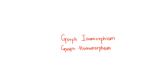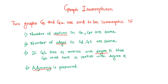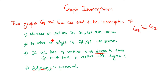In this video, we're going to learn about different types of graph isomorphism and graph homomorphism. So let's see what graph isomorphism is. We say that two graphs G1 and G2 are isomorphic, represented with a specific notation. If four conditions are met, two graphs can be said to be isomorphic. So what are these conditions?